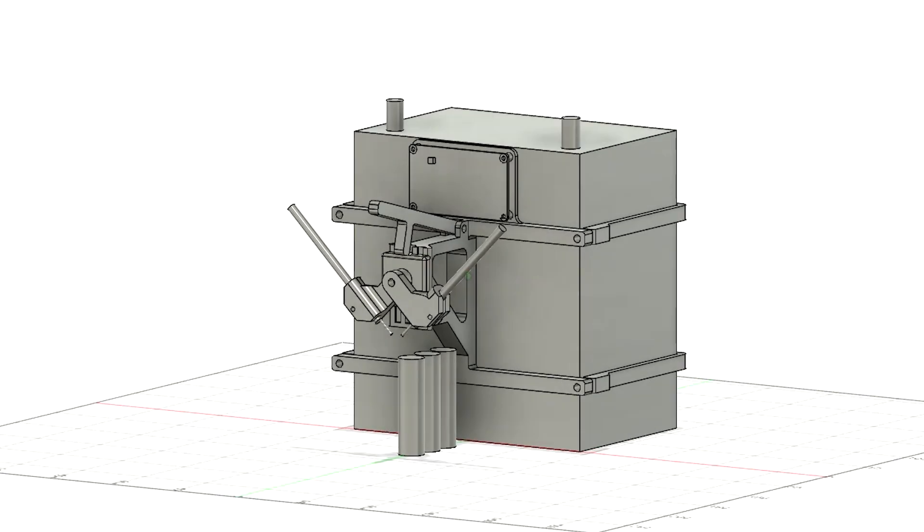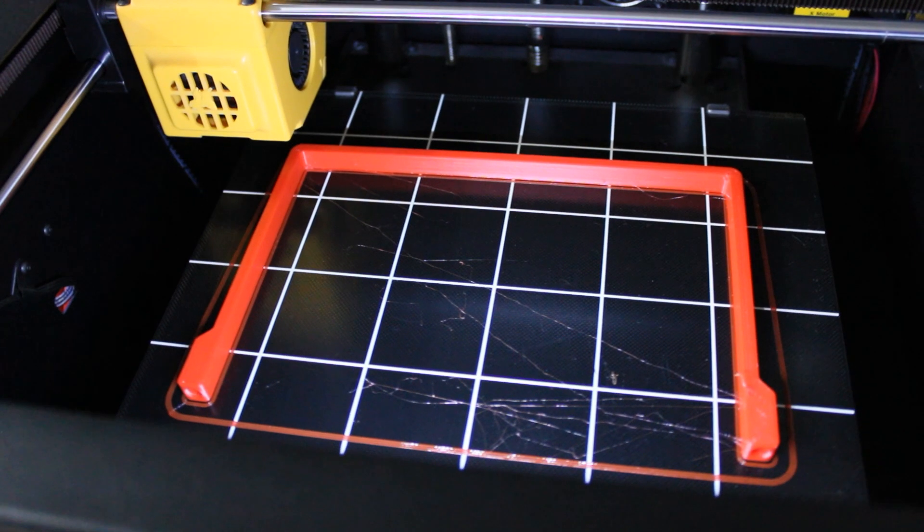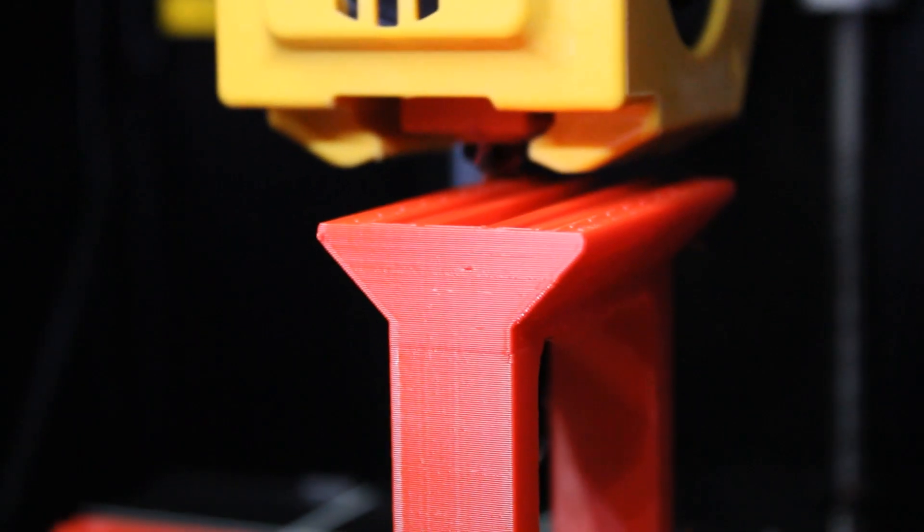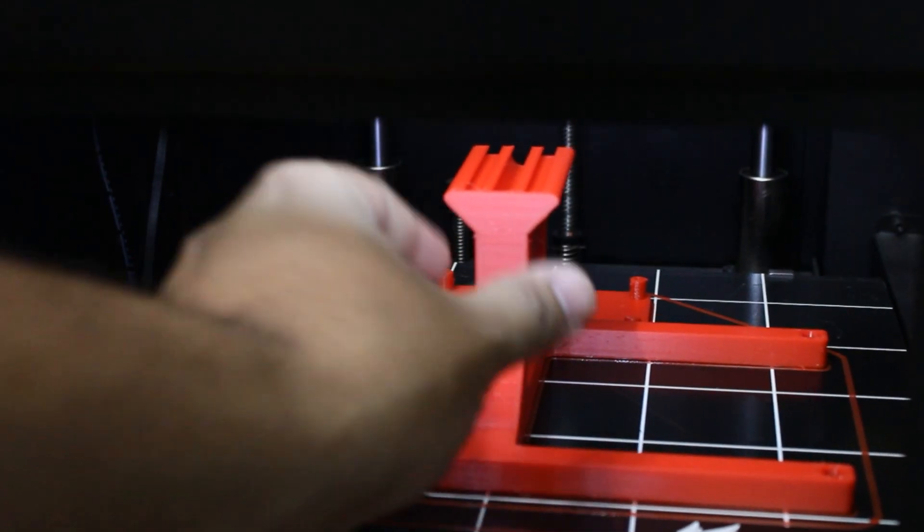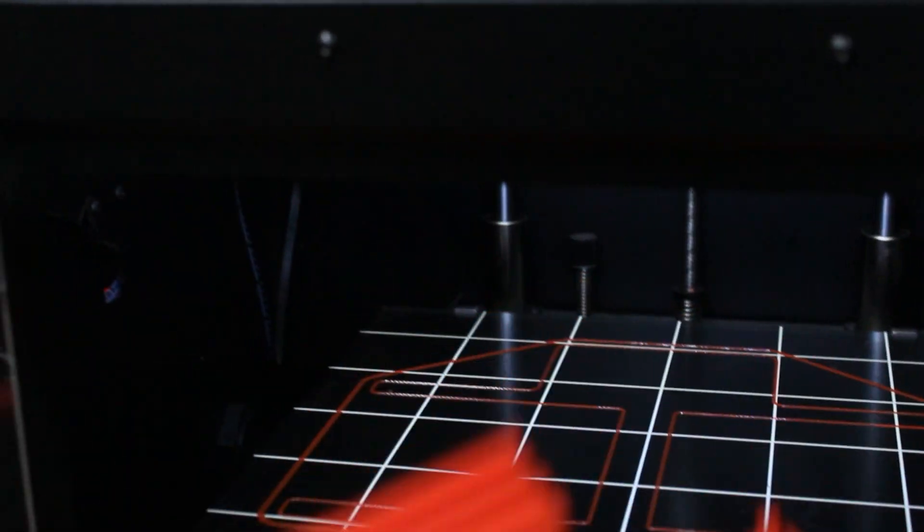I designed everything in Fusion 360, keeping in mind the height I require and other parameters. Then I printed all the parts in PETG material on my Ghost 6 3D printer.